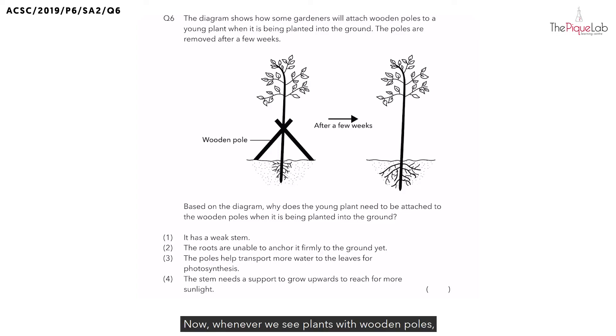Whenever we see plants with wooden poles, we must ask ourselves, what kind of plants need a wooden pole to keep itself upright? Are they plants with weak stems or strong stems? Yes, it's usually plants with weak stems.